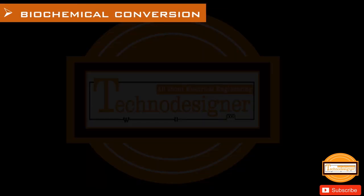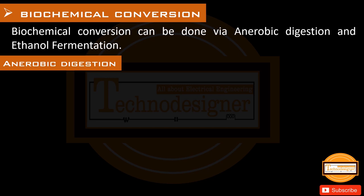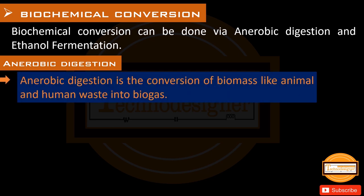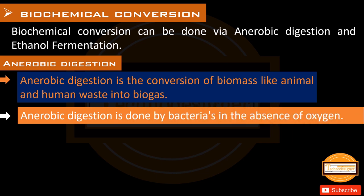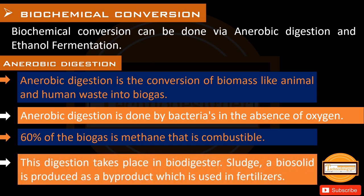Biochemical conversion can be done via anaerobic digestion and ethanol fermentation. Anaerobic digestion is the conversion of biomass like animal and human waste into biogas. Anaerobic digestion is done by bacteria in the absence of oxygen. 60% of the biogas is methane, which is combustible. This digestion takes place in a bio-digester. A biosolid is produced as a by-product which is used in fertilizers.